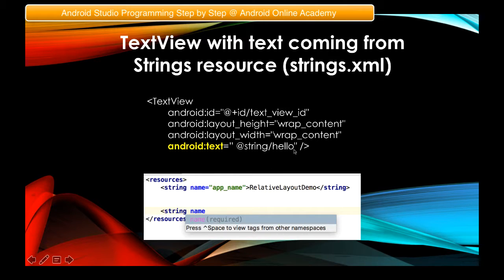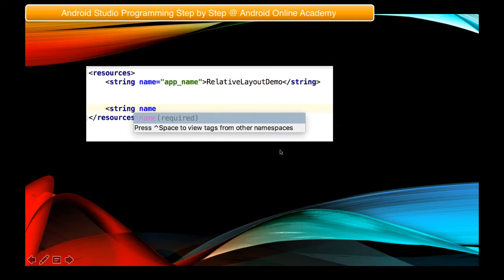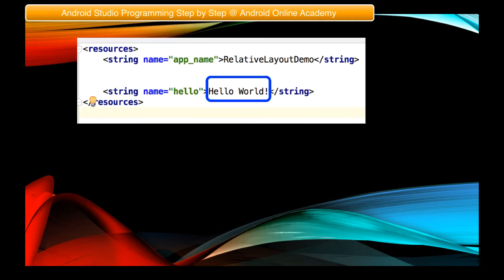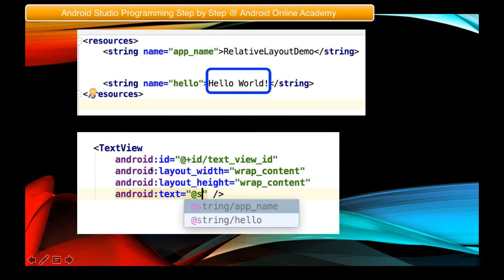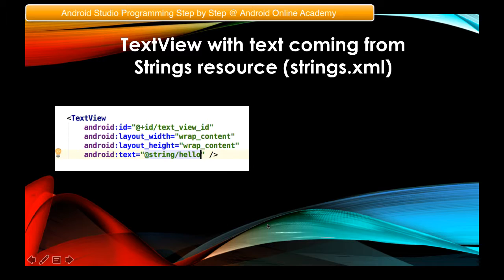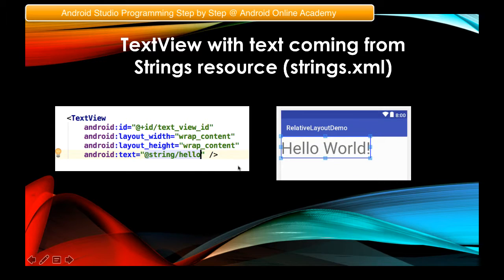We name the string 'hello' so we can call it from the TextView. The value placed between the string tags is 'Hello World!'. When you call '@string/hello' in your TextView's android:text attribute, it references that string. The output is the same as when we hard-coded the text directly — 'Hello World!' is displayed.